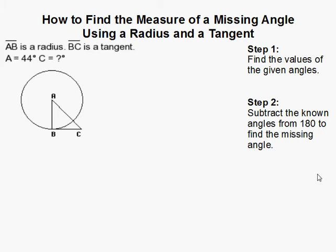How to find the measure of a missing angle using a radius and tangent of a circle. The first thing we have to do is find the values of the given angles.